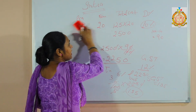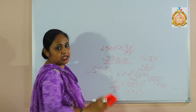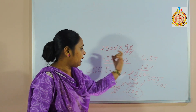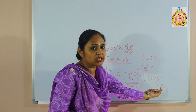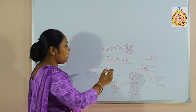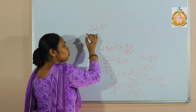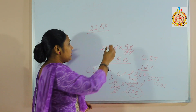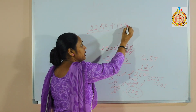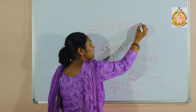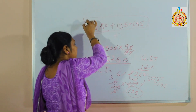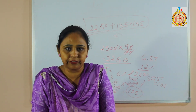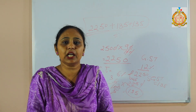Now in the intra case, IGST will be 0, because half goes to the central government as CGST, and half goes to the state government as SGST. So the full payment is: 2250 (cost after discount) + CGST 135 + SGST 135. In the intra case, we find half CGST and half SGST.